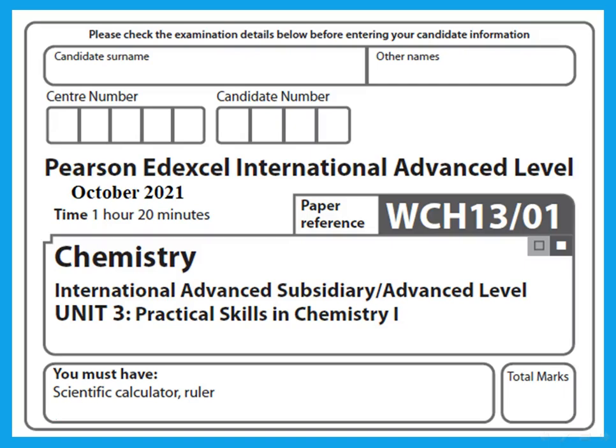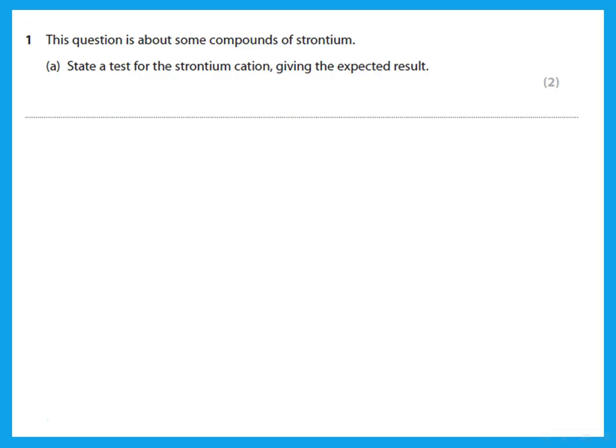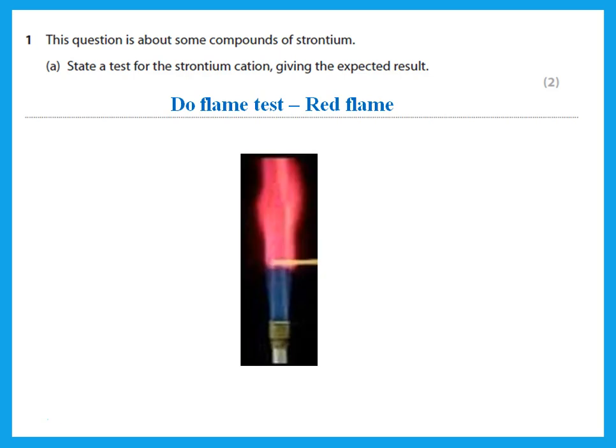Hello, this is Dr. Hannah Oseel. Today we're discussing the answers to the paper on Unit 3, October 2021 in the IAS and Excel syllabus. The first question is about some compounds of strontium. State a test for the strontium cation. Remember that the test for these metal ions is the flame test. For strontium, we get a red flame. When you mention these tests, you should give the results, so don't just say do the flame test—you have to tell me what the expected result is.